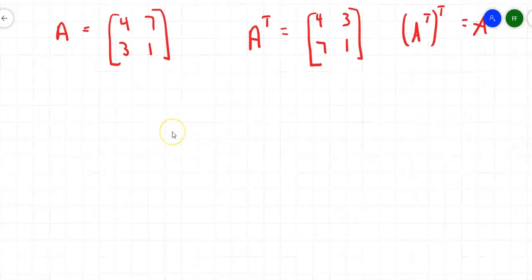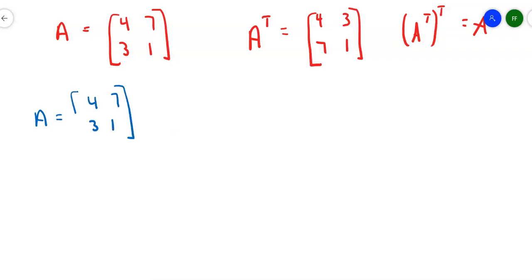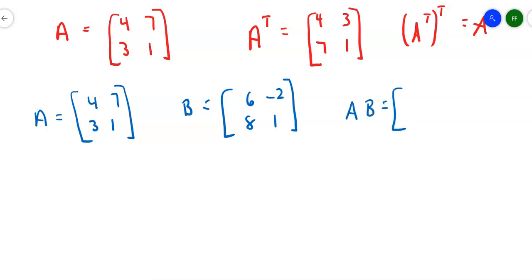How does this work with multiplication? Keep matrix A as 4, 7, 3, 1 and let matrix B be 6, −2, 8, 1. Multiplying AB: row 1 by column 1 gives 4×6 + 7×8 = 80; row 1 by column 2 gives −8 + 7 = −1; bottom left gives 3×6 + 1×8 = 26; bottom right gives −6 + 1 = −5. So matrix AB is 80, −1, 26, −5.